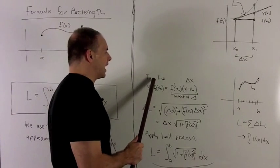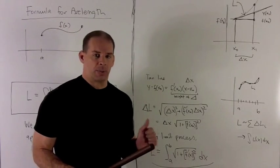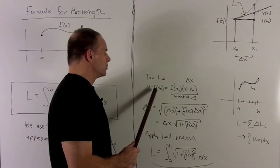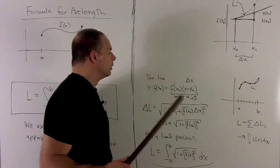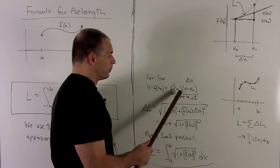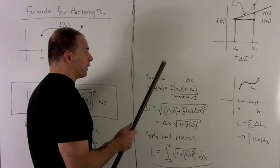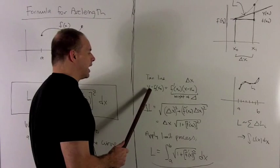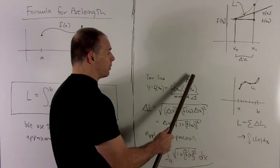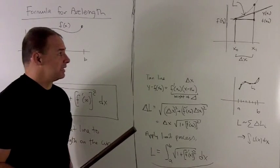Let's pull everything apart. At x0, my tangent line has the equation y minus y0 equals m times x minus x0. My y0 is just the point on the curve, so that's f of x0, and my slope is f prime of x0. This looks like what I want for the height of the right triangle. If I put x1 in for x, then this term here is going to turn into delta x. Now I have everything I need to get L.